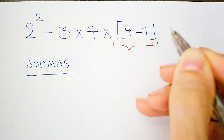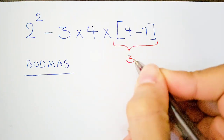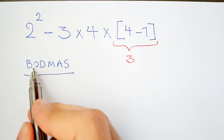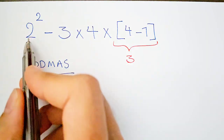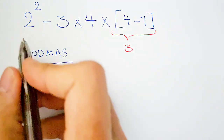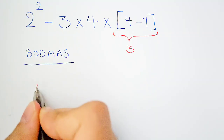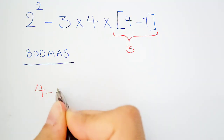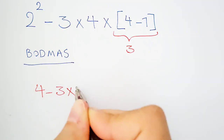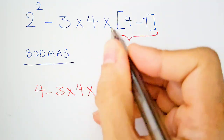The bracket: 4 minus 1 equals 3. Now we have a new expression. After the bracket, the order or exponent has higher priority than the others. So 2 to the power of 2 equals 4, giving us the new expression: 4 minus 3 times 4 times 3.